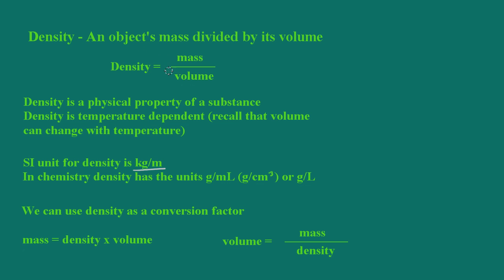The definition of density is an object's mass divided by its volume. We know that density is a physical property of a substance, so each substance will have a characteristic density. Density is also temperature dependent, and that's because volume changes with temperature, and density is dependent on both mass and volume.